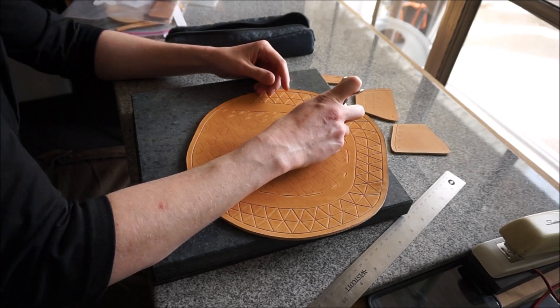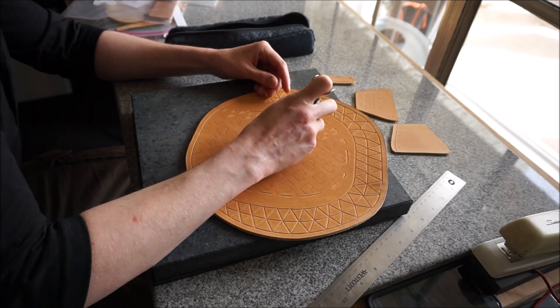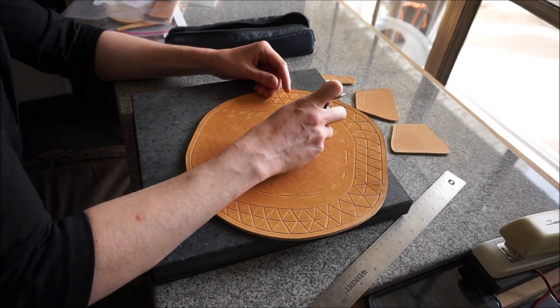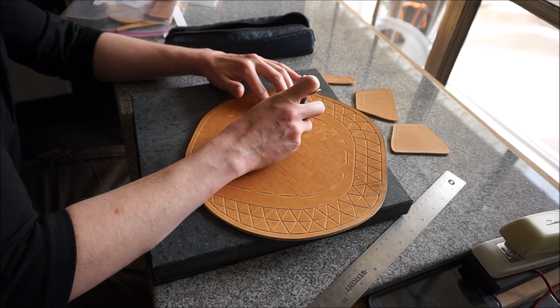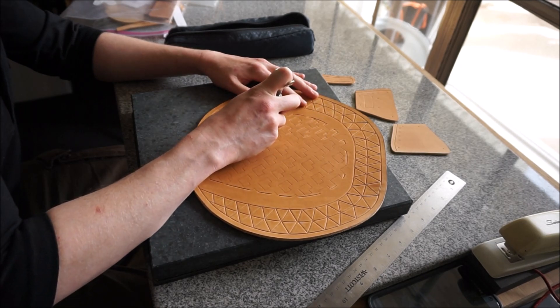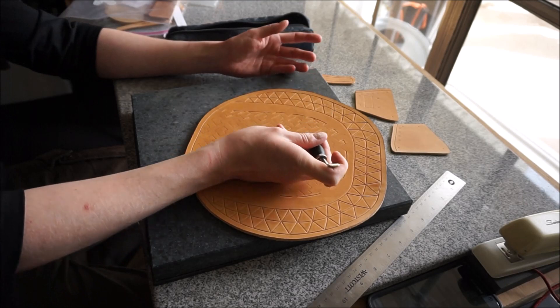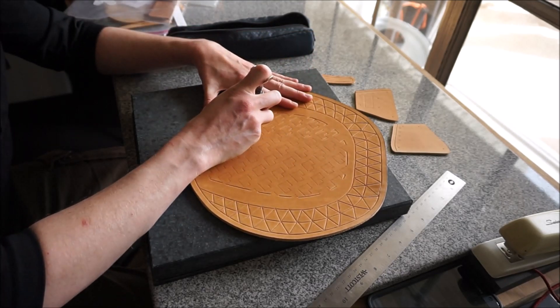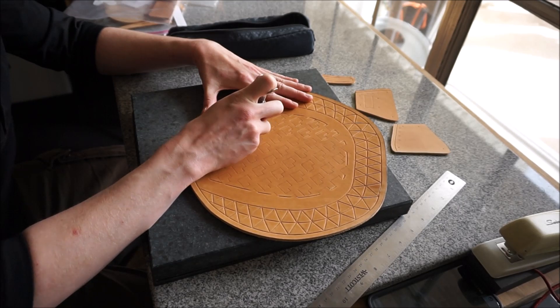So just get some practice with it. Practice on a lot of scrap pieces before you try it with your actual project. Get in the habit of pushing down pretty hard, not so hard that you have no control over where the plate goes, pushing down pretty hard to make these nice channels and to be able to make them in one smooth pass. And also to have control over following the lines that you've traced.